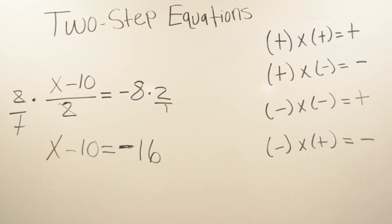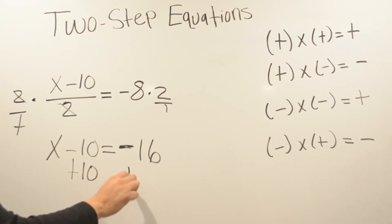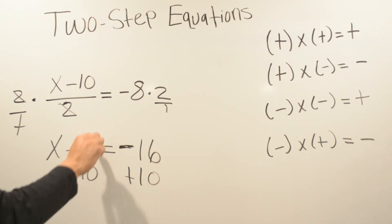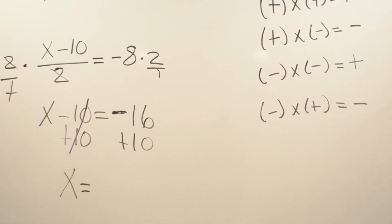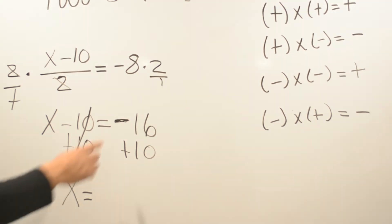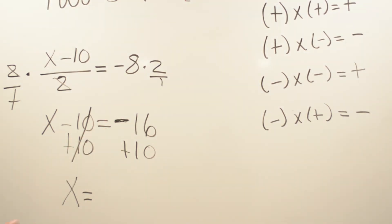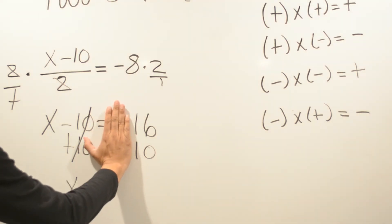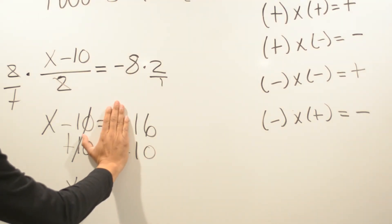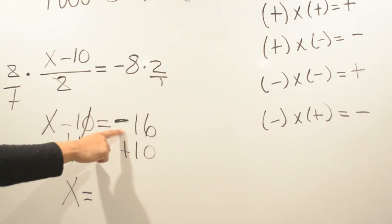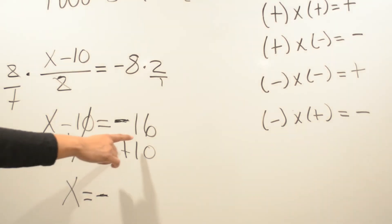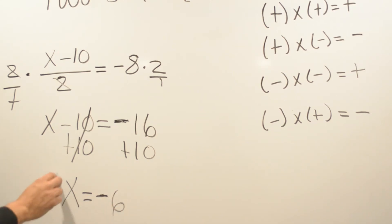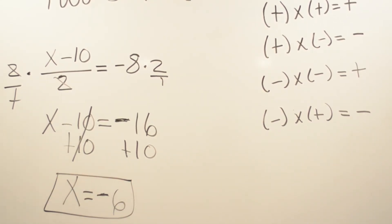So we have x minus ten equals negative 16. Now we're going to get the opposite of negative ten, which is positive ten. Whatever we do on one side of the equal sign, don't forget we have to do it on the other side to keep the balance, leaving the variable x by itself. We have a negative and a positive, so we know we're going to subtract. Covering the signs: which is bigger, 10 or 16? 16 is bigger, and the sign in front of 16 is negative, so the answer is negative. 16 minus 10 is 6, so x equals negative 6.